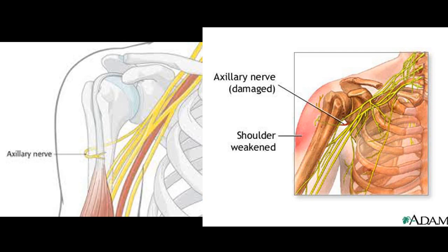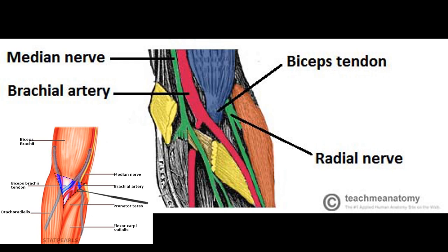The boundaries and contents of the cubital fossa are frequently asked. The contents — from lateral to medial — are: radial nerve, biceps tendon, brachial artery, and median nerve. A helpful mnemonic is 'Really Need Beer To Be At My Nicest.' The walls include the floor, which is your brachialis; the roof, which is your bicipital aponeurosis; and the lateral wall, which is your brachioradialis.